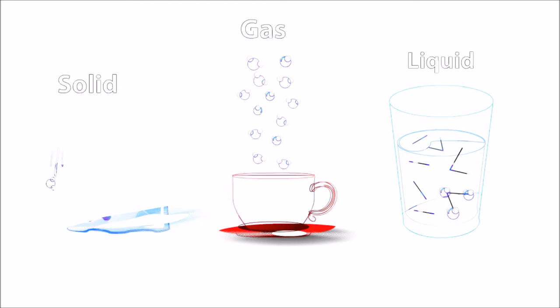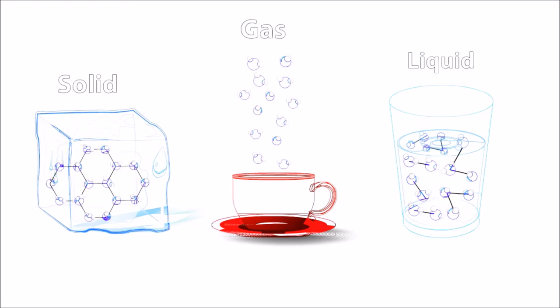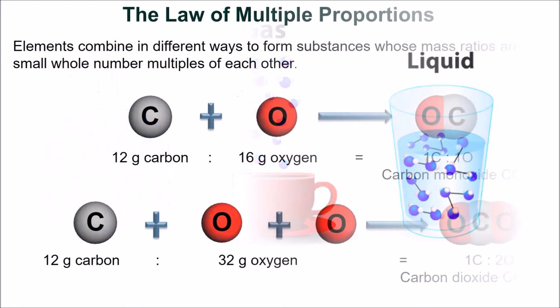Two laws were formed based on observations of scientists conducting research in the late 18th and early 19th century. These laws predate atomic theory and were instrumental to scientists in determining that matter is composed of atoms. The law of multiple proportions, proposed by the French chemist Joseph Proust, states that elements combine in different ways to form substances whose mass ratios are small, whole number multiples of each other.